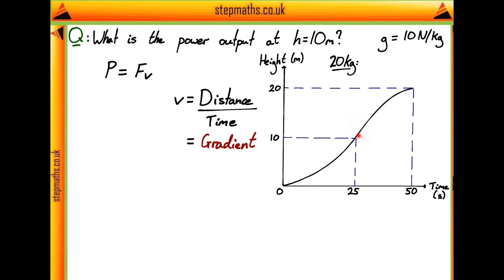The velocity of our mass of 20 kilograms is just the gradient of the graph at a point. We can consider the gradient at a height of 10 meters, and we can see that at this point the graph is pretty straight, so the gradient is quite easy to read off. On the real graph, it comes out to be 0.5 meters per second.